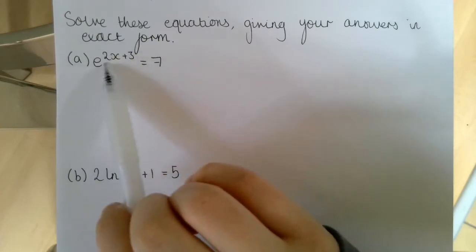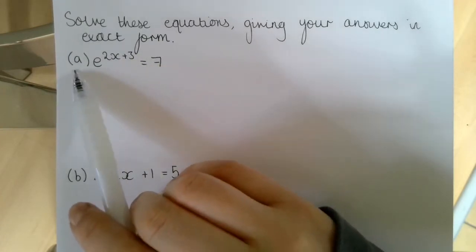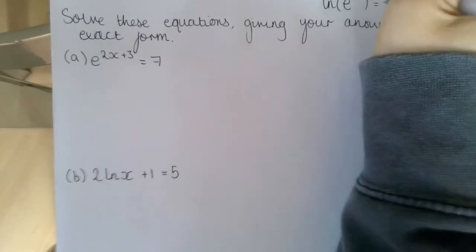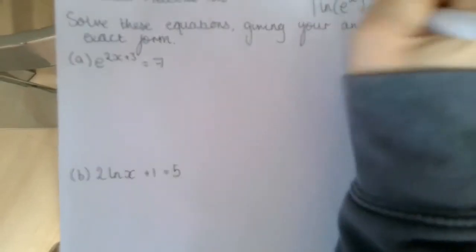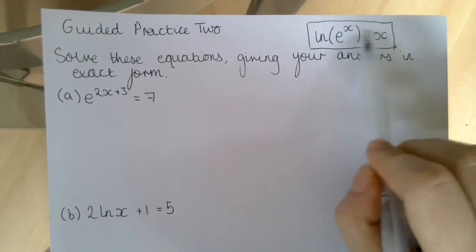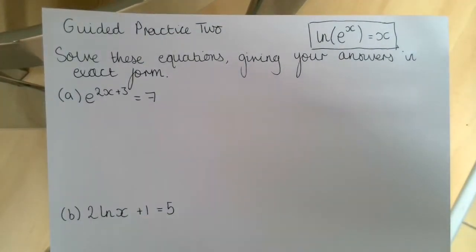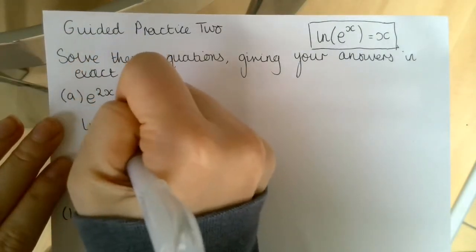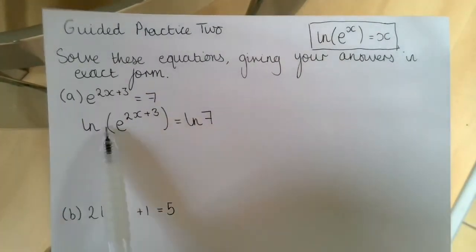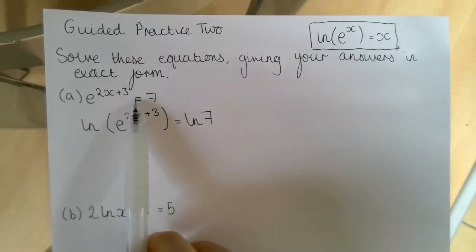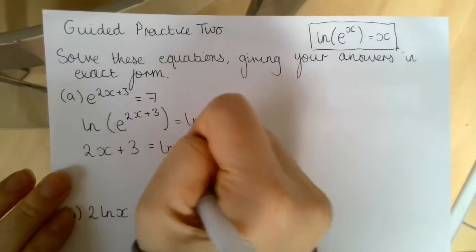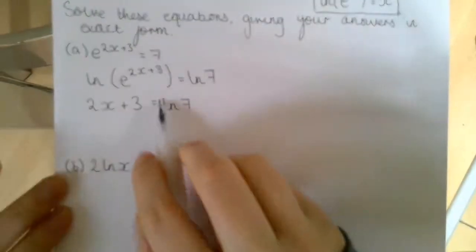For the first one, we've got e to the power of (2x + 3) equals 7. We know that the natural logarithm of e to the power of x is equal to x, so if we take the natural logarithm of an exponential we end up with our unknown variable. Taking the natural logarithm of both sides: ln of e to the power of (2x + 3) gives us the power 2x + 3, which equals ln 7.